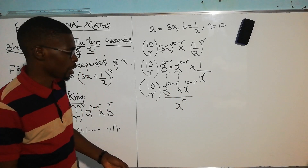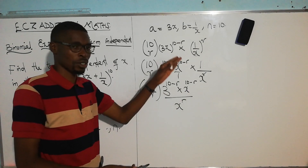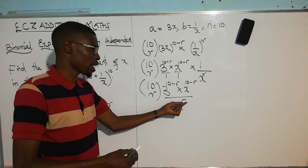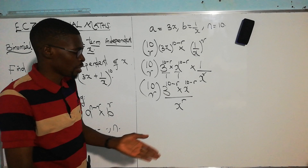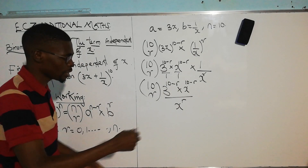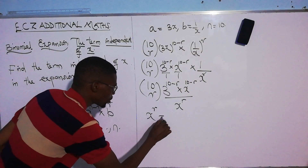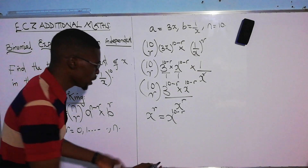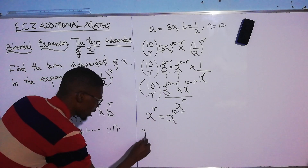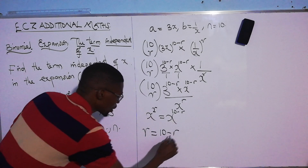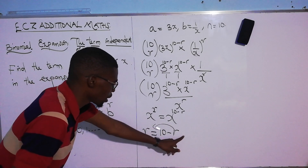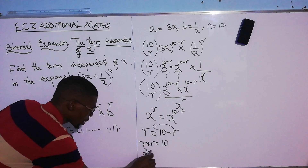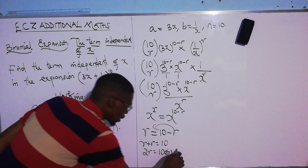If this term is independent of x, the x's must cancel out completely. For that to happen, the powers must be equal — meaning x to the power (10 minus r) divided by x to the power r equals 1. So we set 10 minus r equal to r, giving us r plus r equals 10, which means 2r equals 10.